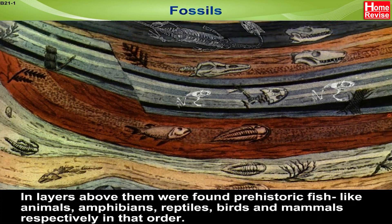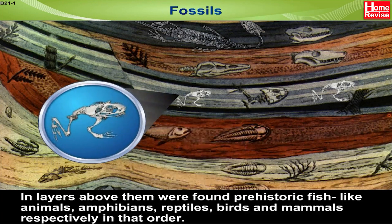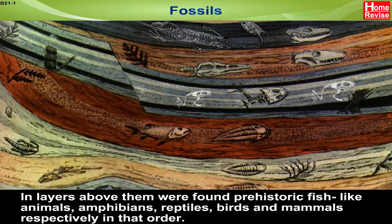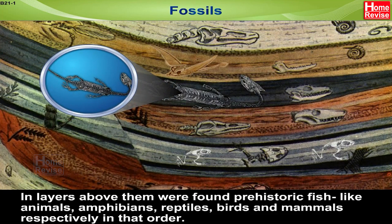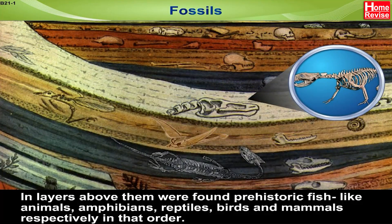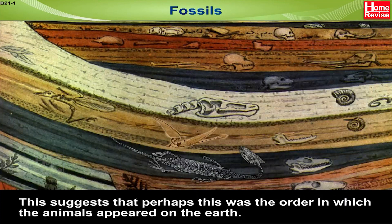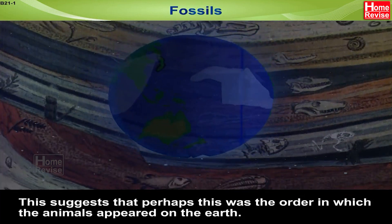In layers above them were found prehistoric fish-like animals, amphibians, reptiles, birds and mammals respectively in that order. This suggests that perhaps this was the order in which the animals appeared on the earth.